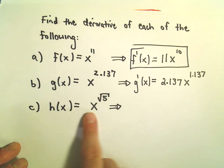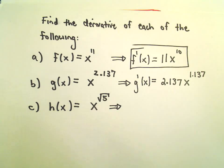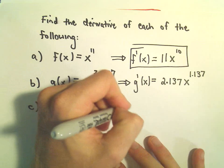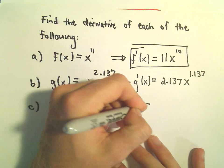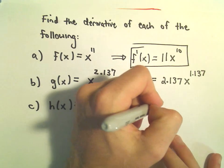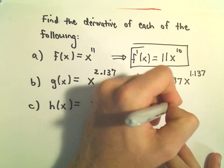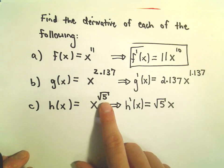So for part C, we have h of x equals x raised to the square root of 5. So again, when I look at this, I say, well, I've got a variable to a number. The exact same rule gets used as before. So the square root of 5 will come out front, and then we have x raised to the new power.